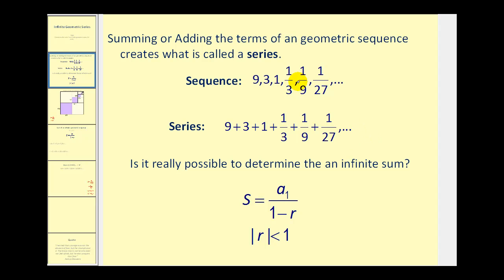It is actually possible to find the sum of an infinite geometric series if the absolute value of r is less than one. If that is the case, the infinite sum will be equal to a sub one divided by one minus r.